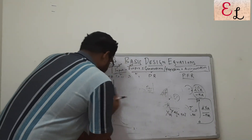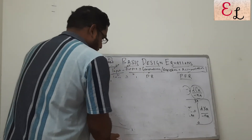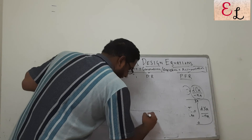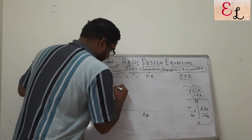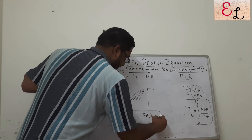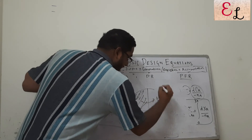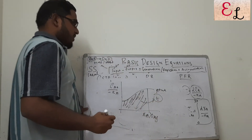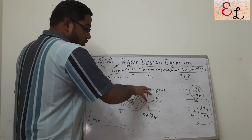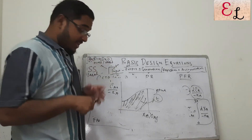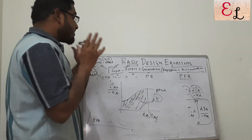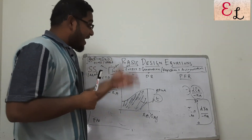For a batch reactor, if we plot CA0 divided by minus rA against XA, the area under the curve gives the time T. For a PBR, plotting FA0 divided by minus rA against XA, the area gives the weight of the catalyst W, not the volume V. So to summarize: volume for CSTR, volume for PFR, time for a batch reactor, and weight of catalyst for a packed bed reactor — these are the four things you design for individual reactors.